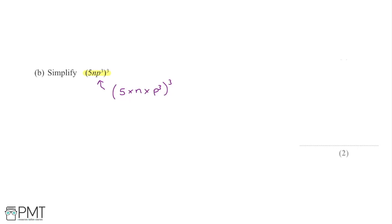Starting with the 5, we raise 5 to the power of 3. That's going to be multiplied by n in the bracket raised to the power of 3, so multiplied by n to the power of 3, and then finally multiplied by p to the power of 3, raised to the power of 3 again — so p to the power of 3 to the power of 3.